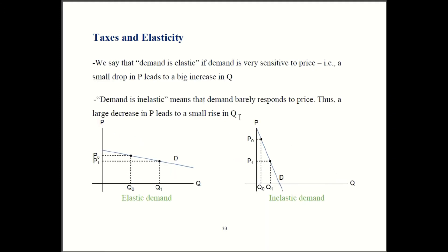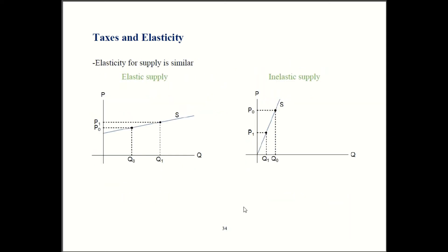So here is elastic demand and there is inelastic demand. Supply is very similar. This first graph shows an elastic supply curve — a small change in P gives you a big change in Q, so supply is very sensitive to price. The second graph shows inelastic supply — a big change in P results in only a modest change in Q. So this supply curve does not respond very much to price; it does respond, just not very dramatically.